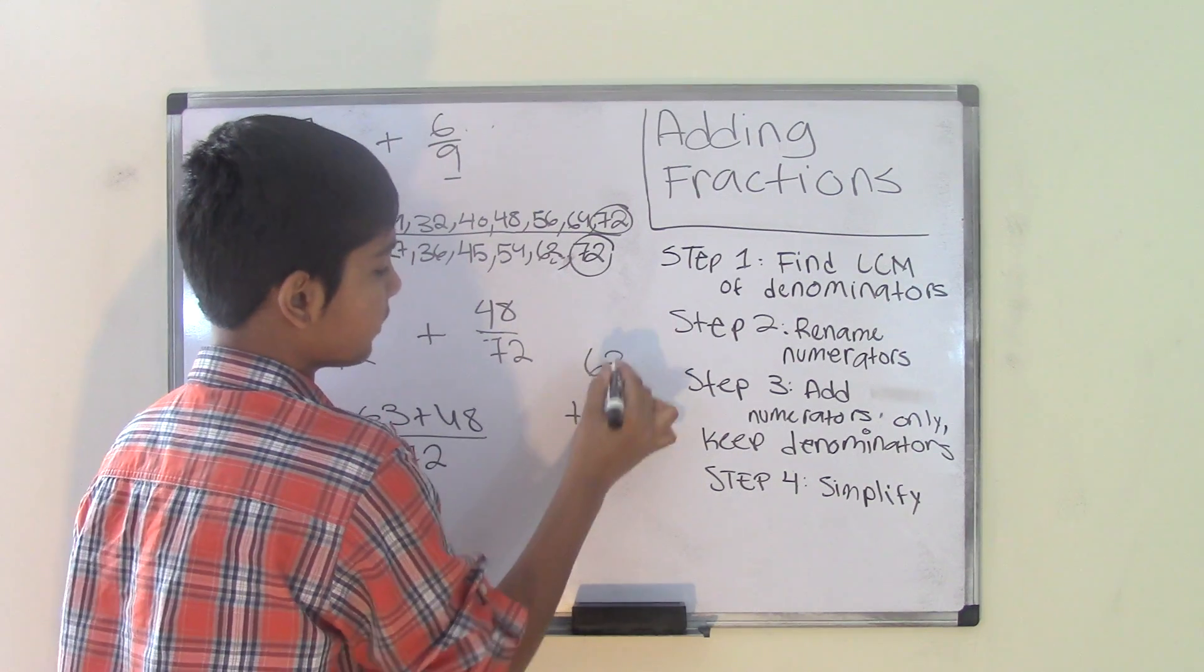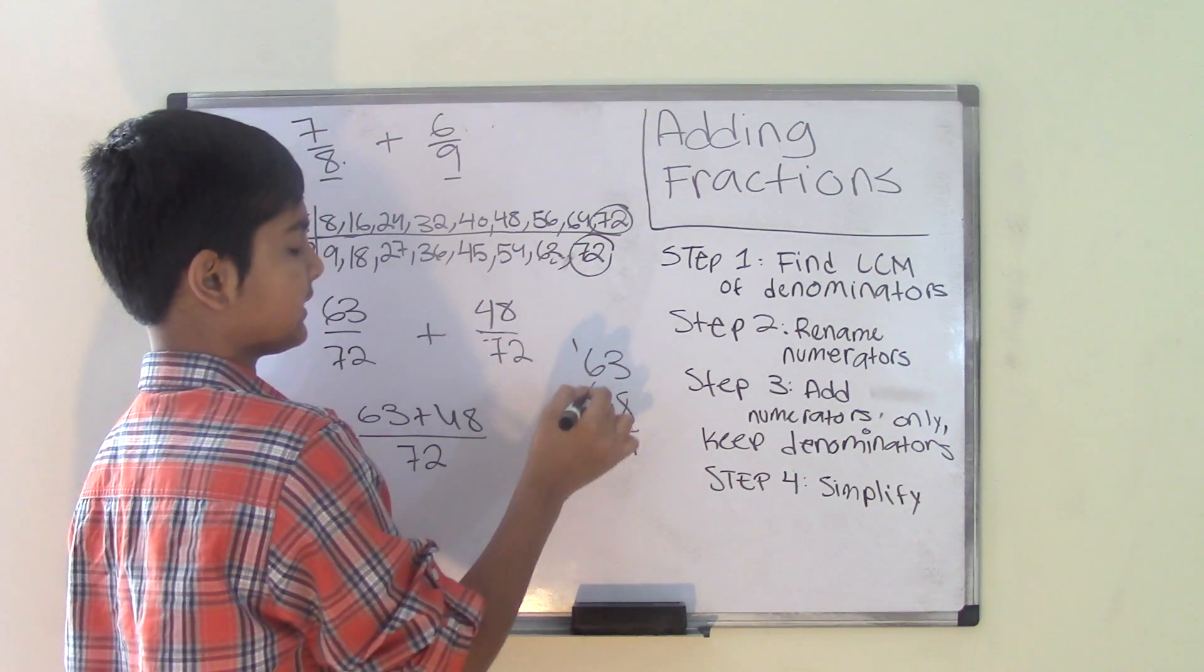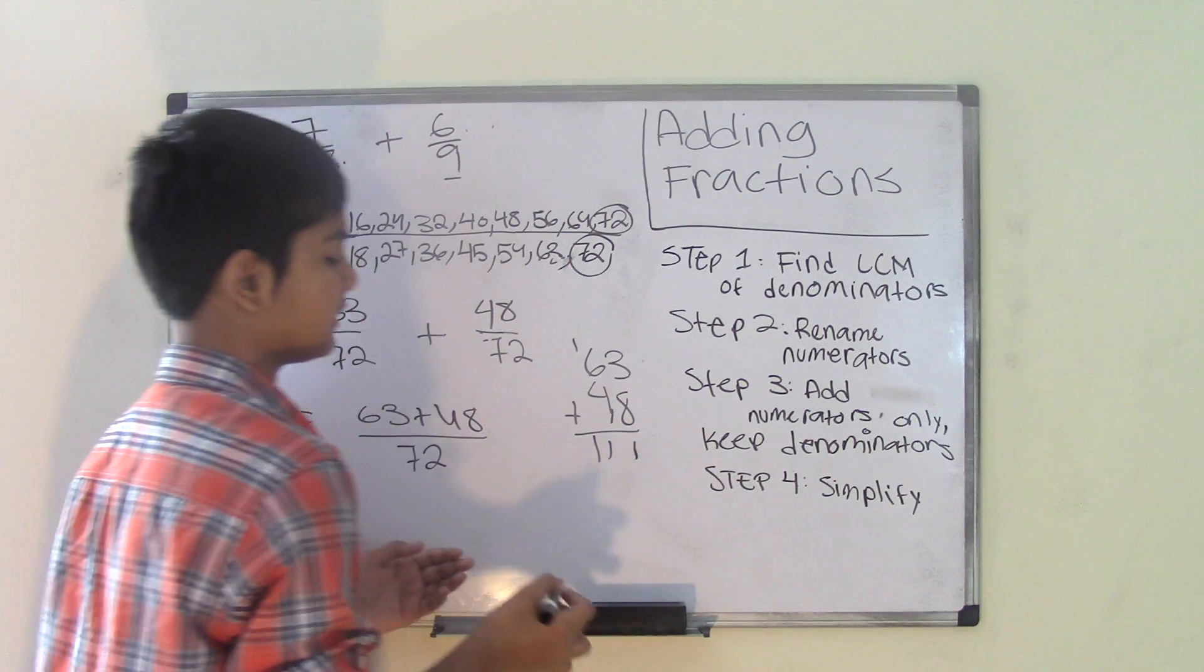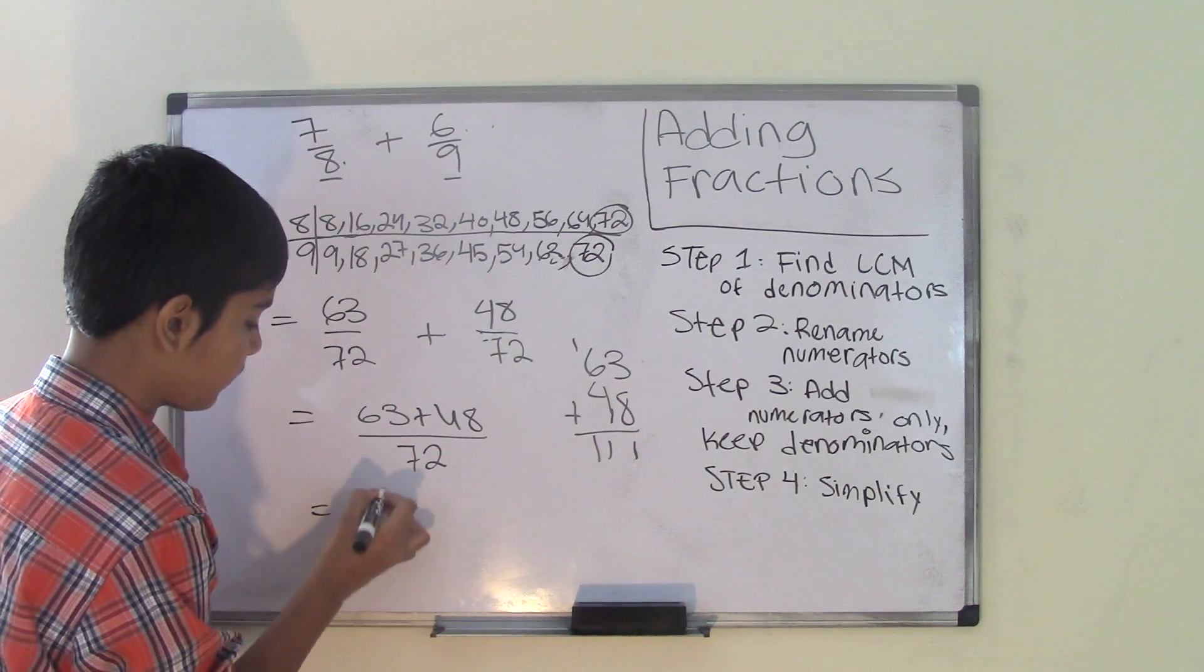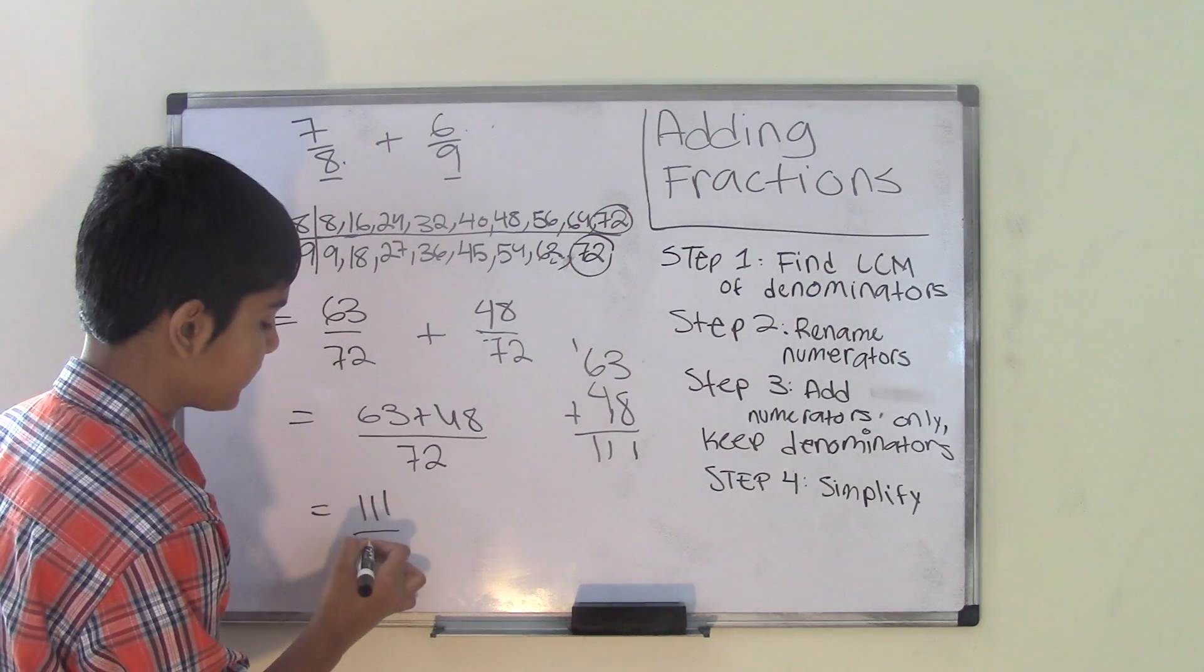So 3 plus 8 is 11. Bring that one over. 6 plus 1 is 7, plus that 4 is 11. So we get our number which is 111. So 111 is going to be our numerator, and we keep the denominator as it is, 72.